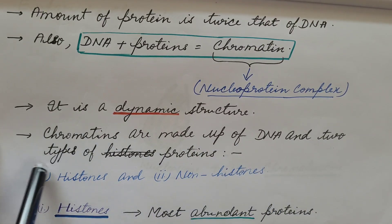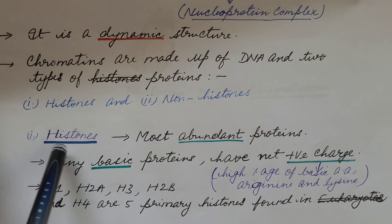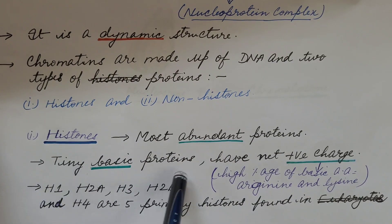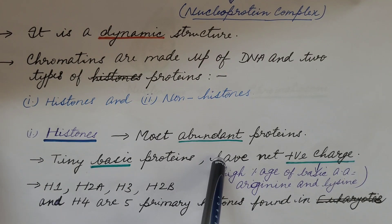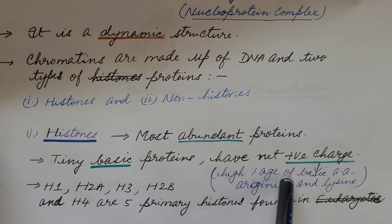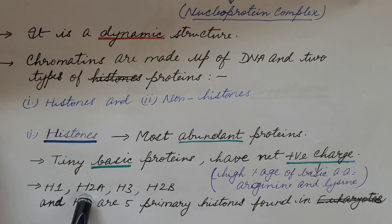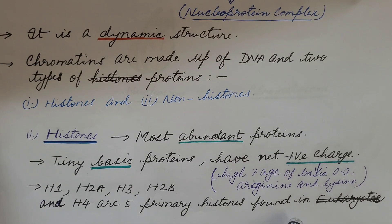Chromatin is made up of DNA and two types of proteins: histone proteins and non-histone proteins. Histone proteins are the most abundant proteins. These are small basic proteins and have a net positive charge. This positive charge is due to the presence of a high percentage of basic amino acids like arginine and lysine. H1, H2A, H2B, H3, and H4 are the five primary histones found in eukaryotic chromosomes.